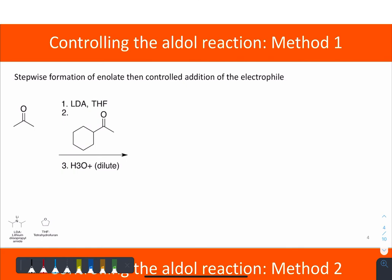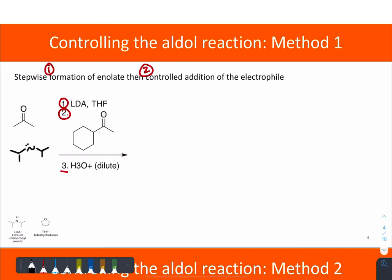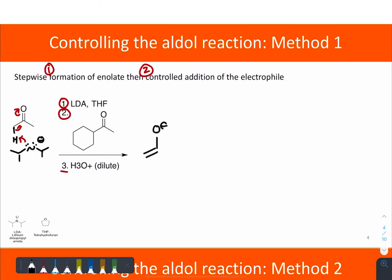Approach number one involves the selective formation of the enolate in a first step, and then a controlled addition of the electrophile. That's what we see in steps one and two, with a third step just serving to neutralize the final product. In step one, lithium diisopropyl amide — LDA — which we've seen before, is a strong non-nucleophilic base that quantitatively deprotonates the alpha proton to generate that enolate. Once all the molecules have been transformed into the enolate form, then step two happens.